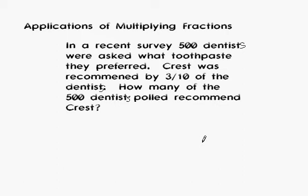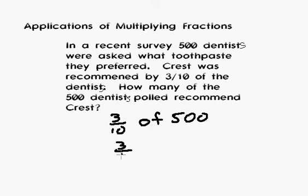If you want to pause it and see if you can figure it out, now would be a good time. So what we need to do here is we need to figure out what is three-tenths of 500. Three-tenths of these dentists recommended Crest. In this context, when you have a fraction and then the word of, that means multiply. So three-tenths times 500, and we're going to write that 500 as 500 over 1.